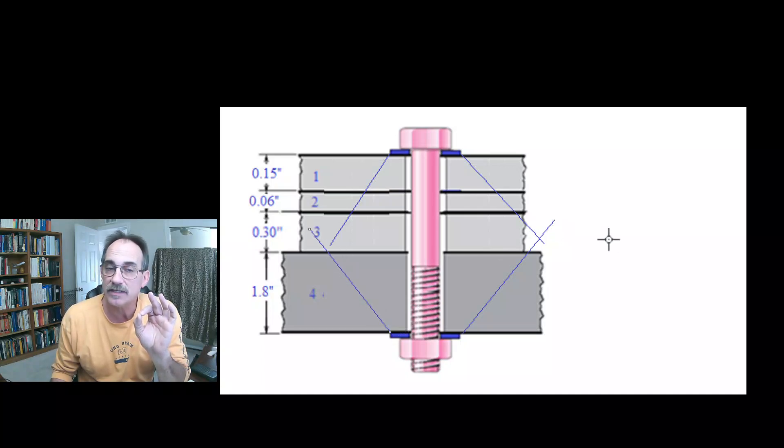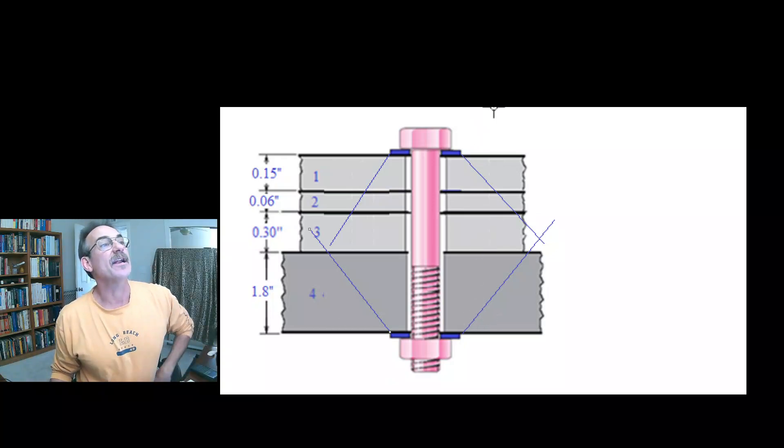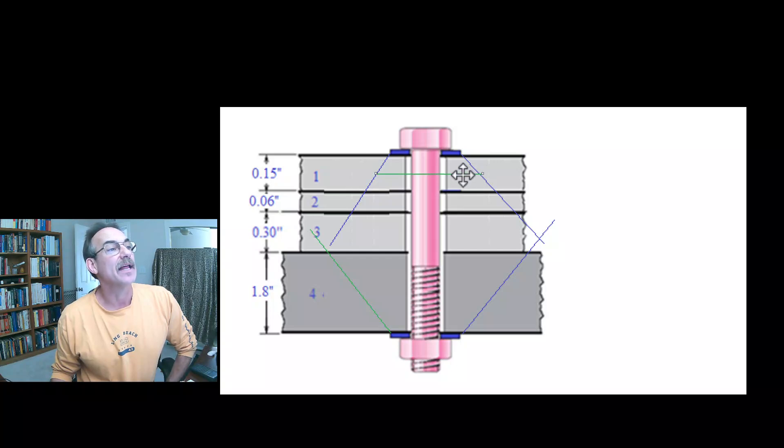That's going to give us two choices for critical diameter. As you can see, each critical diameter is different. At the middle of plate one, our effective diameter would be right here at the mid-plane of that plate. That's the smallest.